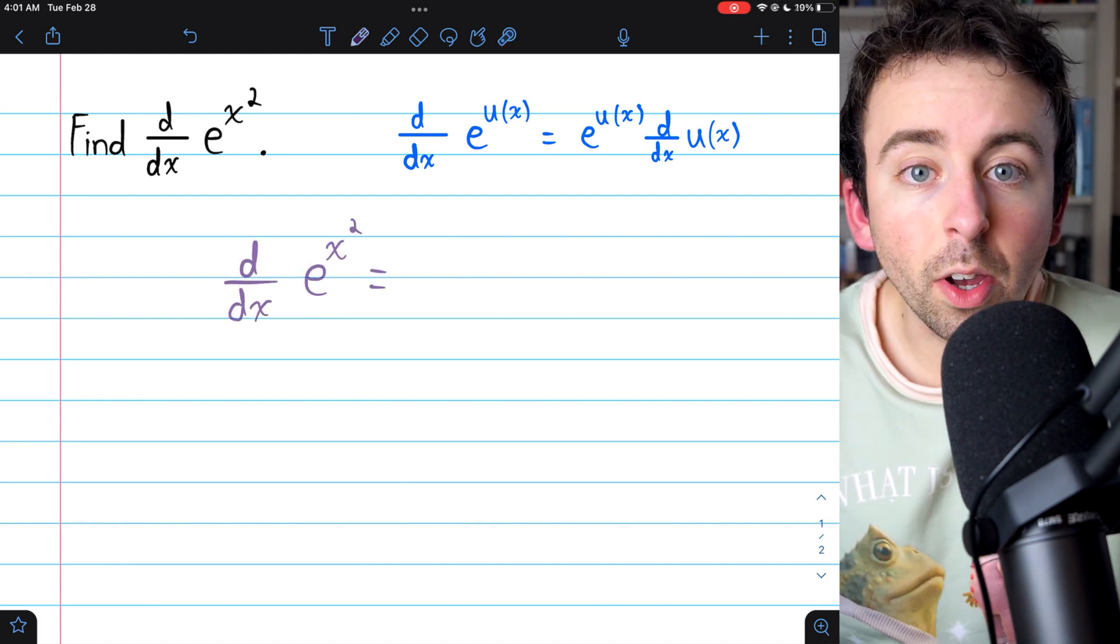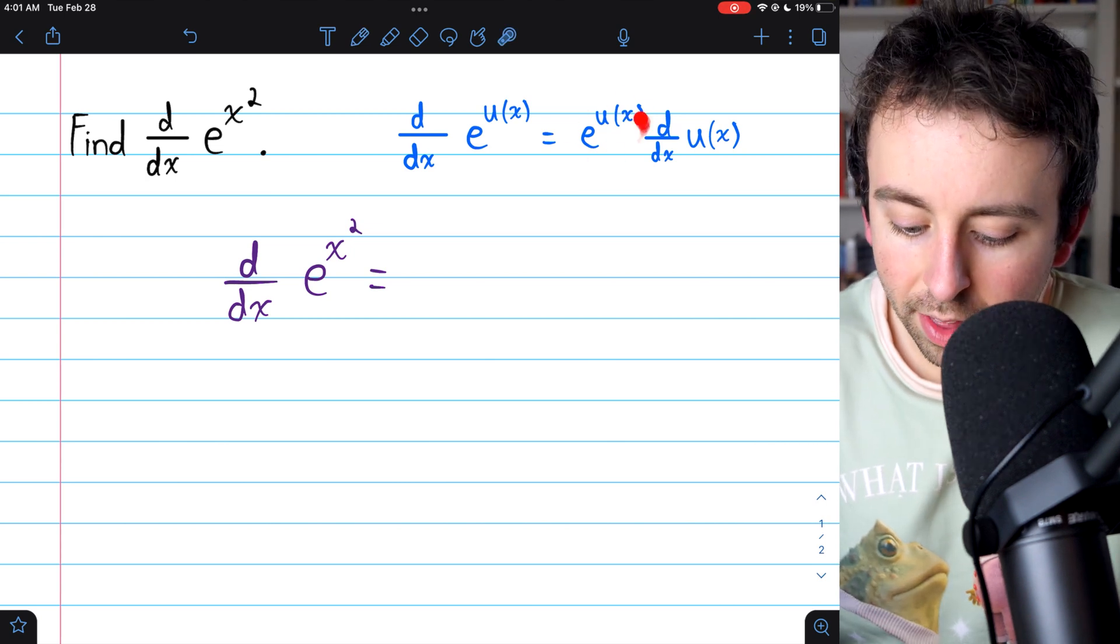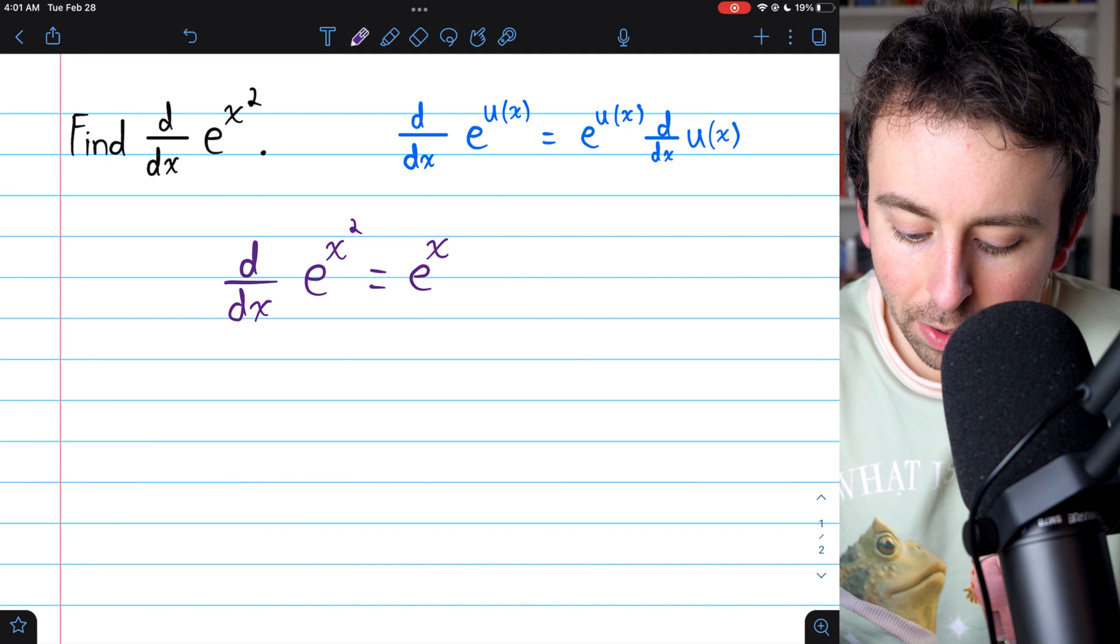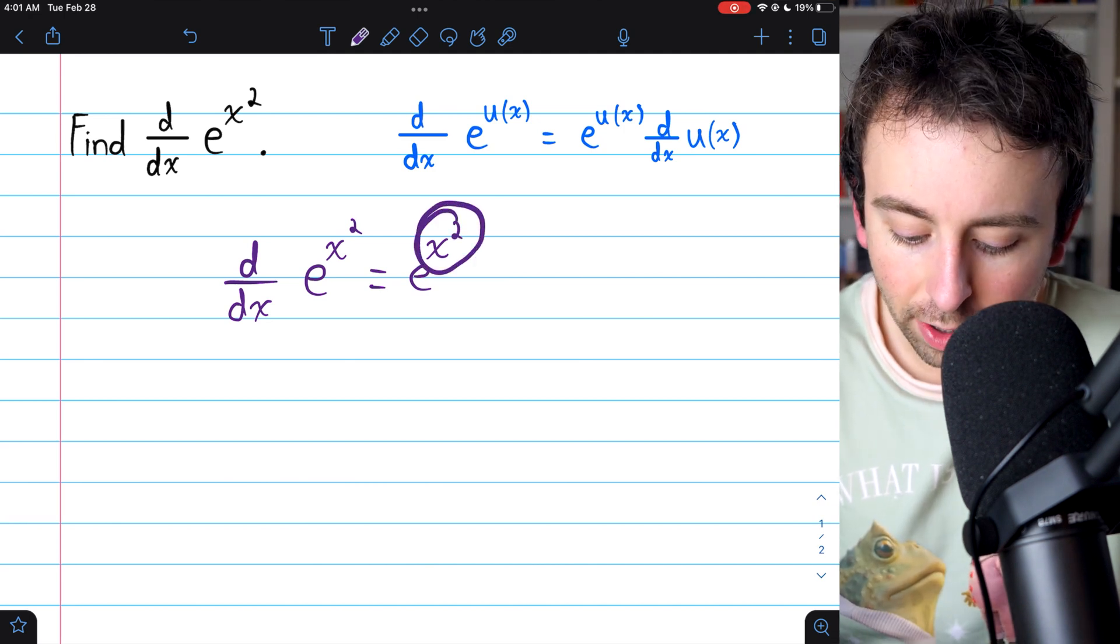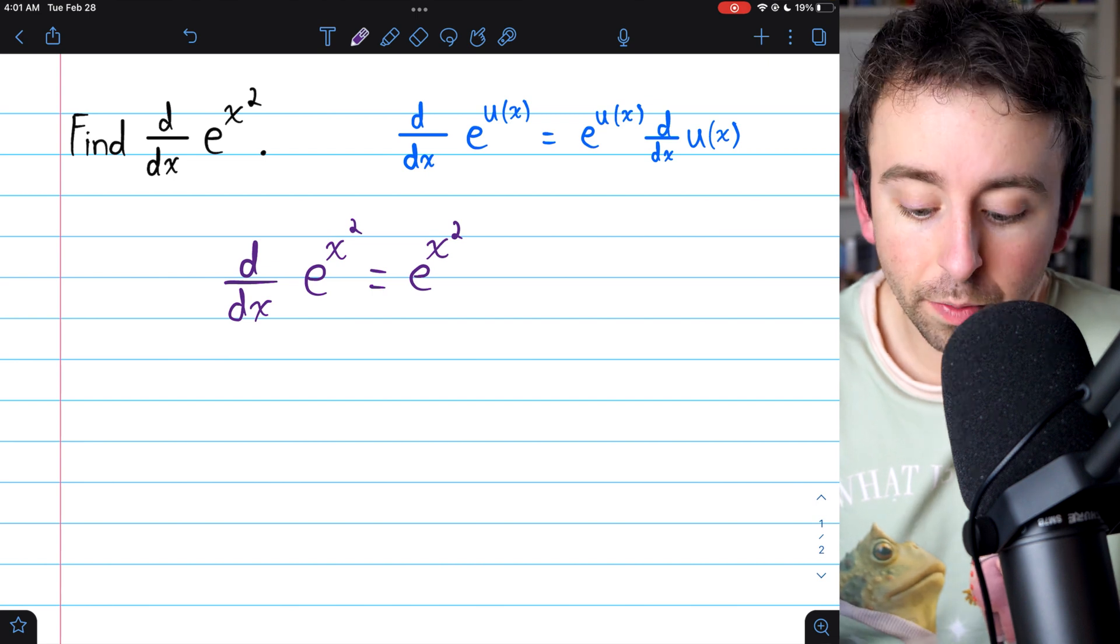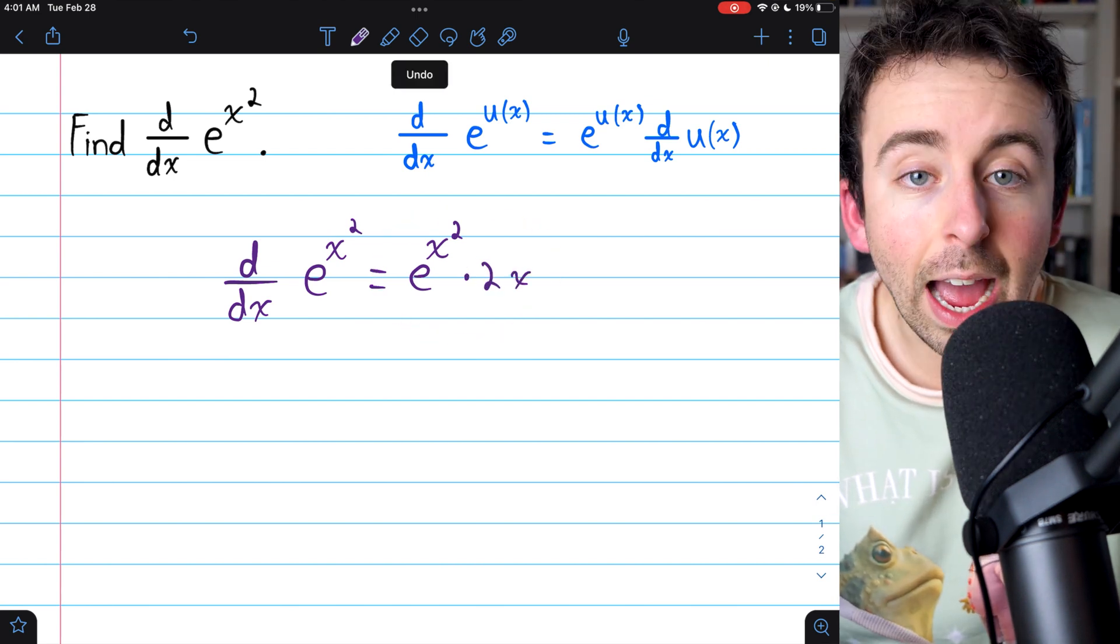It's just chain rule. So to take the derivative of e to the x squared, we need to begin with e to the power, that doesn't change, but then we need to multiply by the derivative of that inside function in the exponent. The derivative of x squared is just 2x and so this is our derivative.